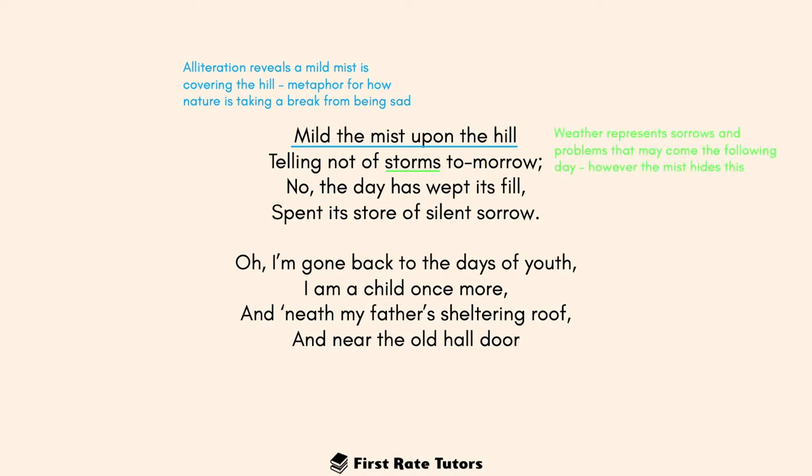The mention of storms is also significant. This mist is covering the hill and not telling us of storms that will come tomorrow. The weather here represents the sorrows and problems that may come the following day. However, the mist hides all of this. By extension, the speaker reflects on how the day seems to have no issues, but this is hiding maybe problems that might come tomorrow.